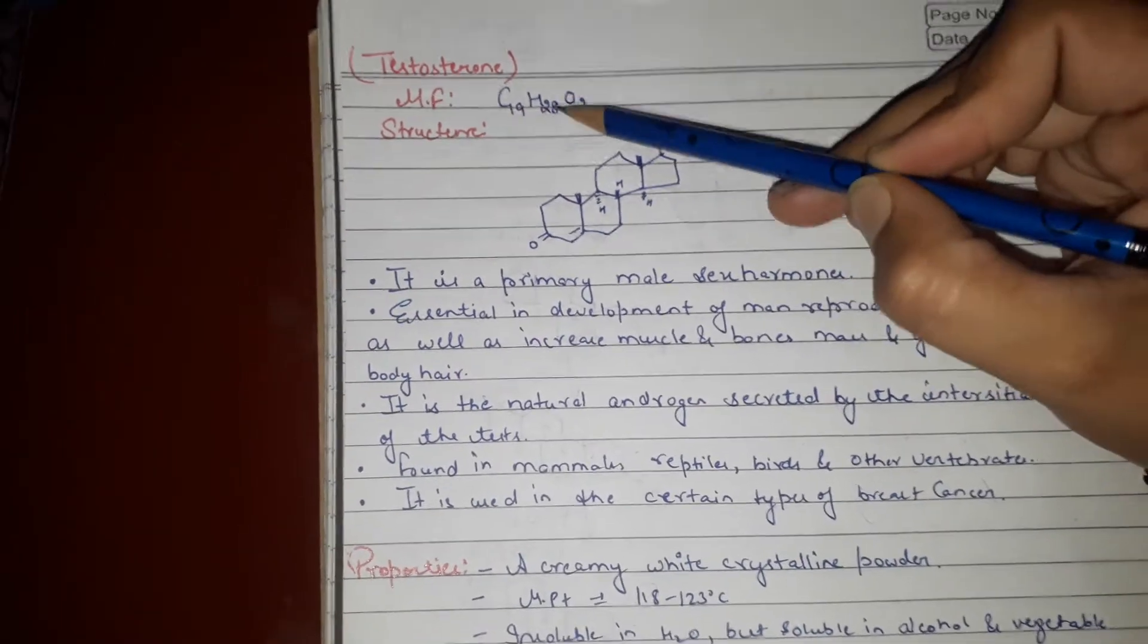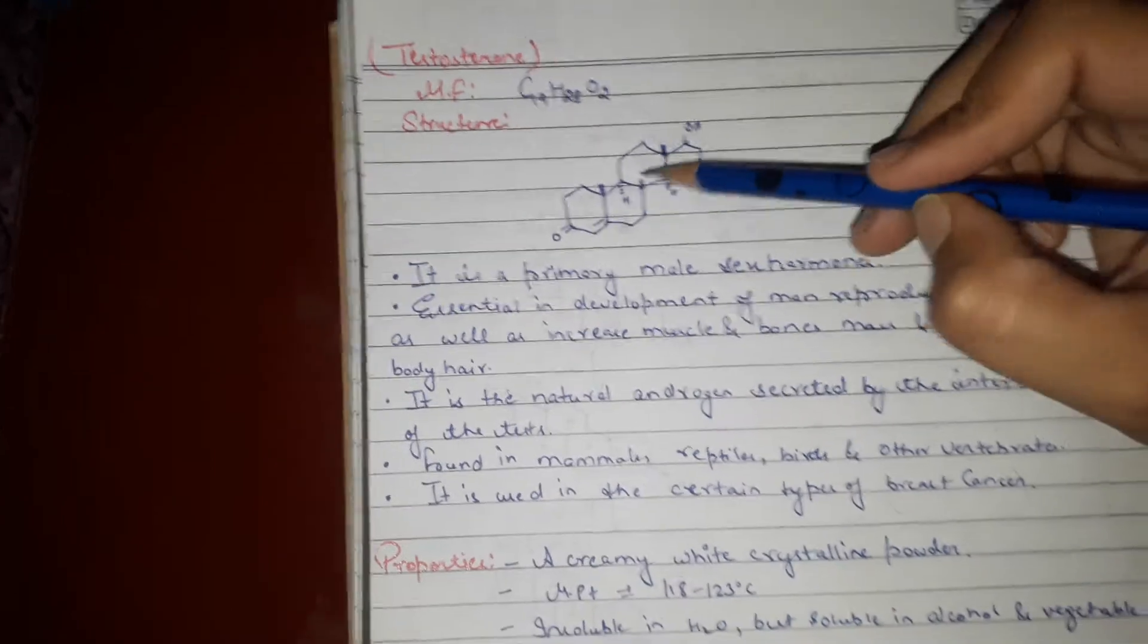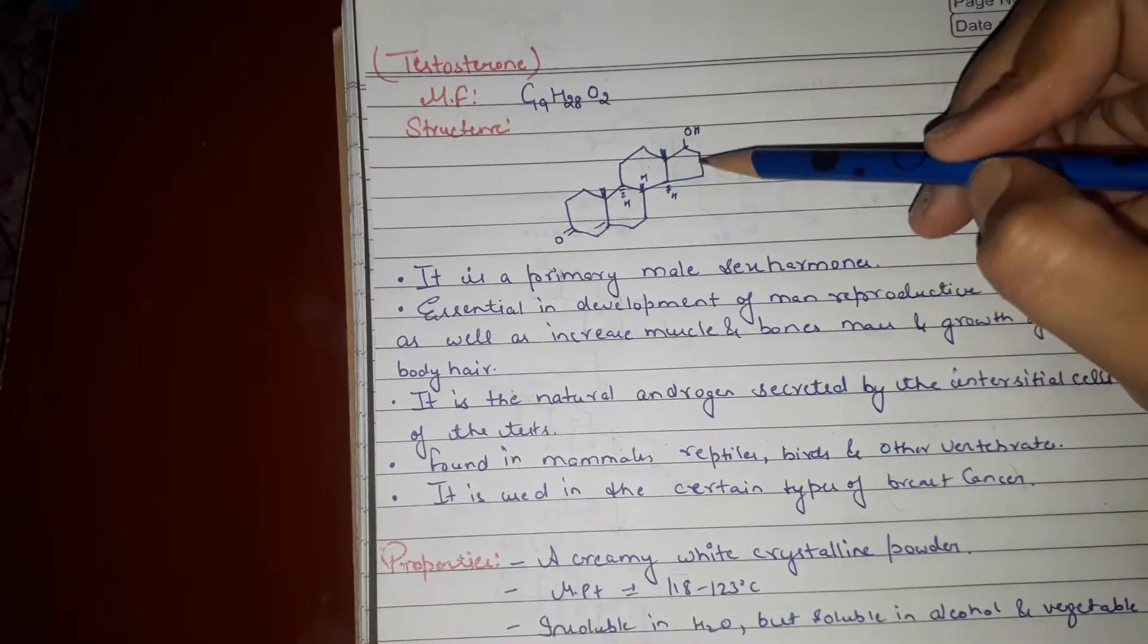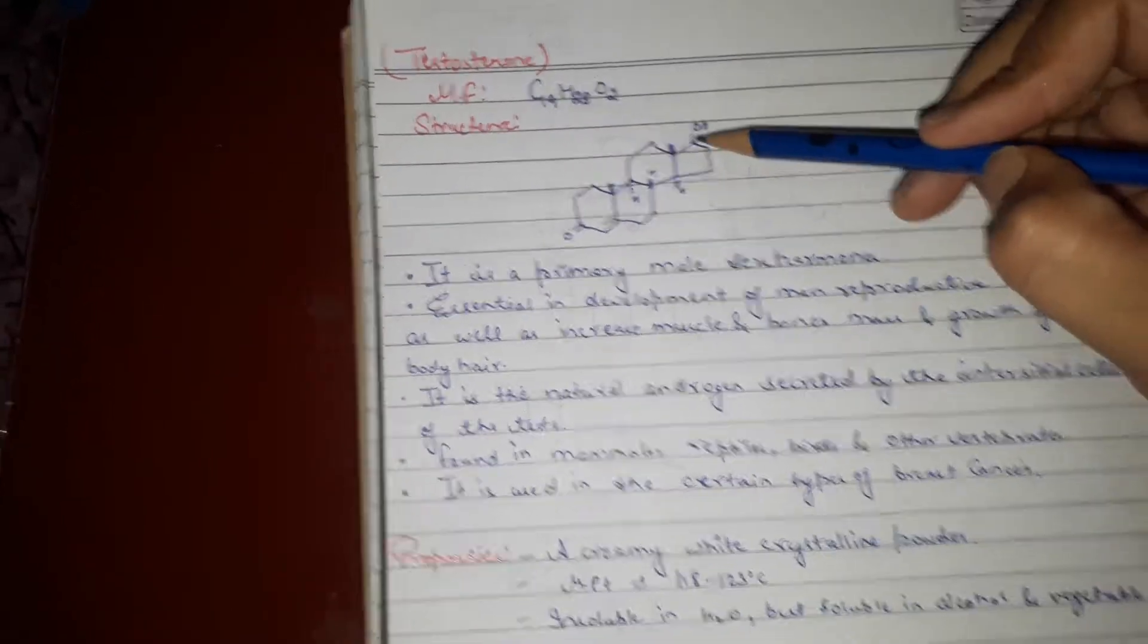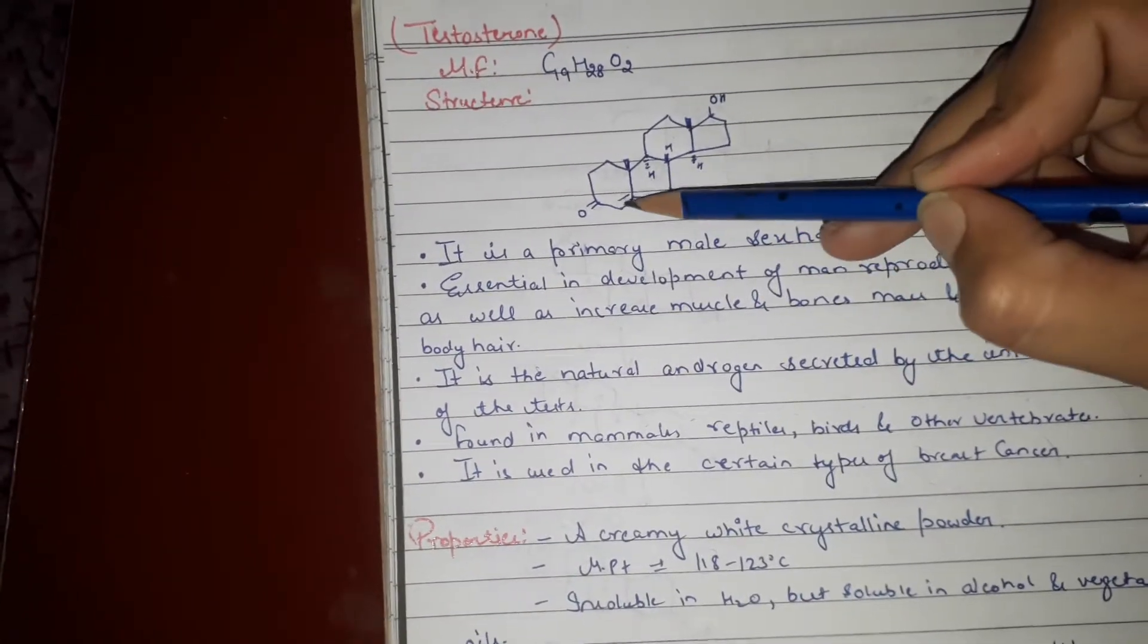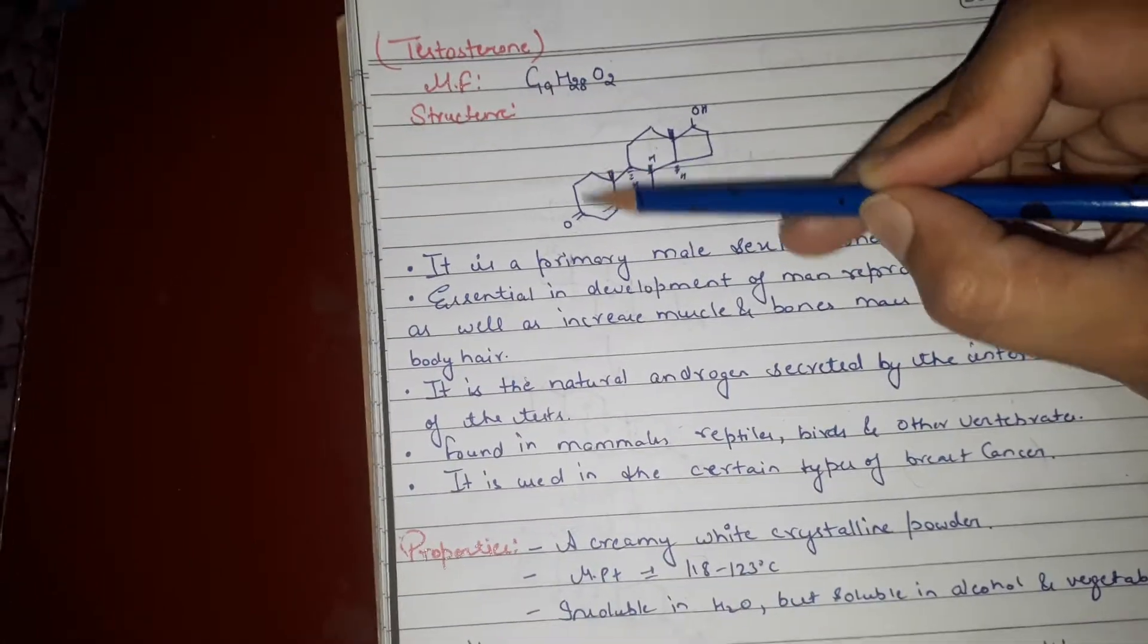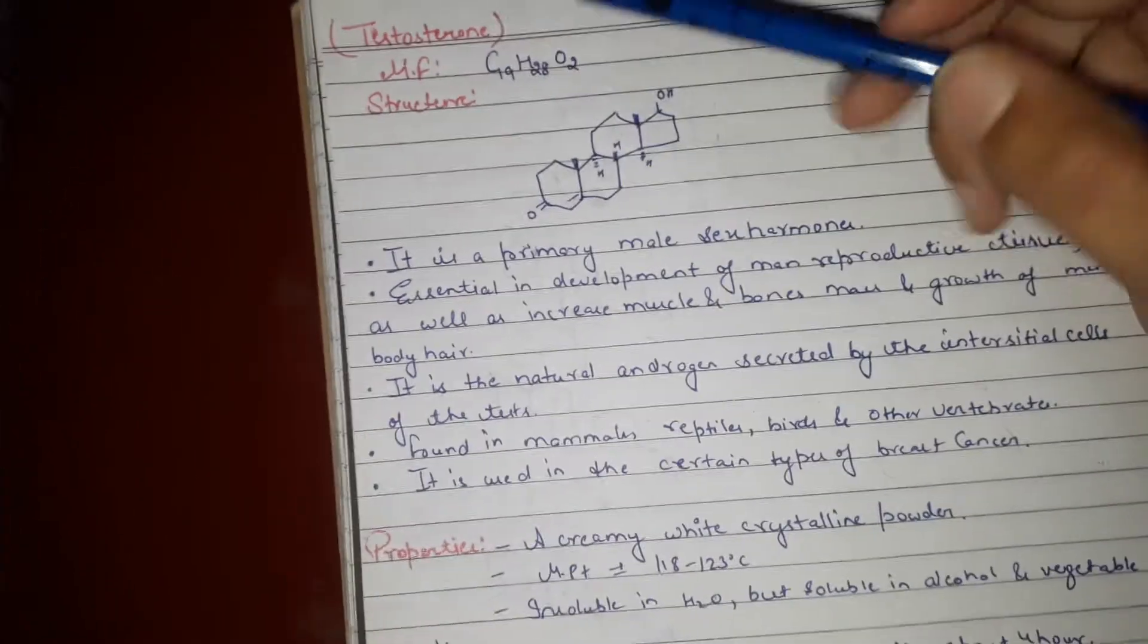Molecular formula C19H28O2. Structure consists of three six-membered rings and one five-membered ring which consists of OH at C17 position and double bond at C3 position with carbonyl group O and one bond on A ring.